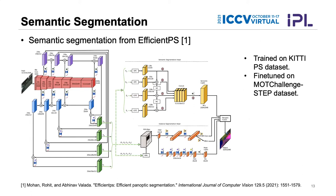For semantic segmentation, we use a module based on EfficientPS, trained on the Cityscapes panoptic segmentation dataset and then fine-tuned on the MOT challenge STEP dataset. We chose not to use the instance segmentation results from EfficientPS because our instance masks from the tracking method are much better. Instead, we combine the semantic segmentation results from EfficientPS with the instance masks from our previous method as the final panoptic output.